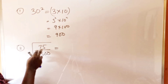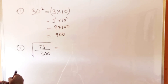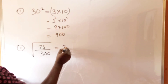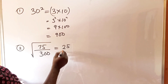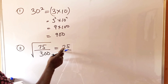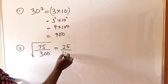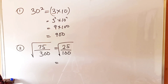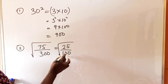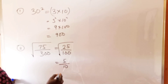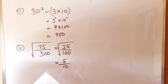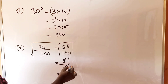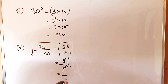When we use 3 to divide 75, it gives us 25, and we can find the square root of 25. So we have the square root of 25 which is 5, and the square root of 100 which is 10. That gives us 5 over 10, which simplifies to 1 divided by 2. That is the answer to question number 2.